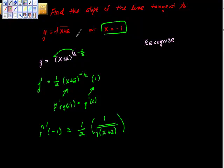So now we're going to take this at x equals negative 1. We get 1 half times 1 over the square root of 1. Of course the square root of 1 is 1, so this equals 1 half.